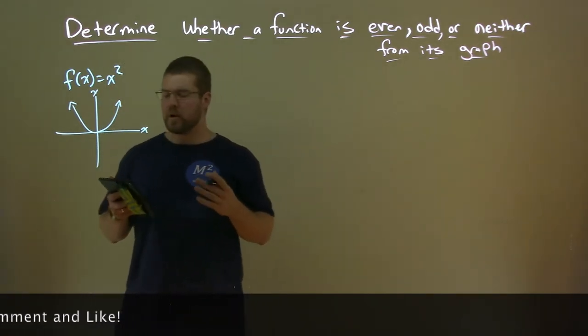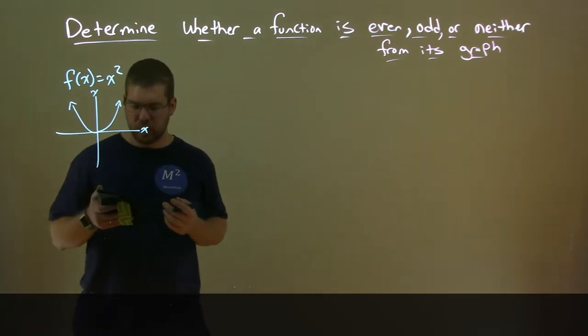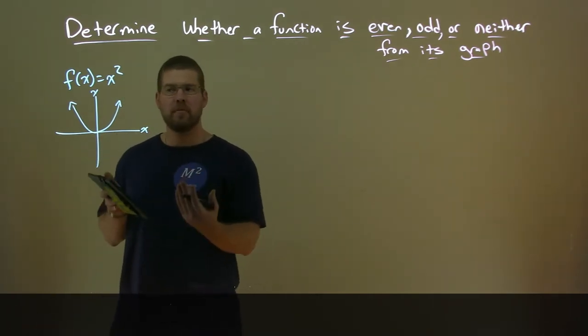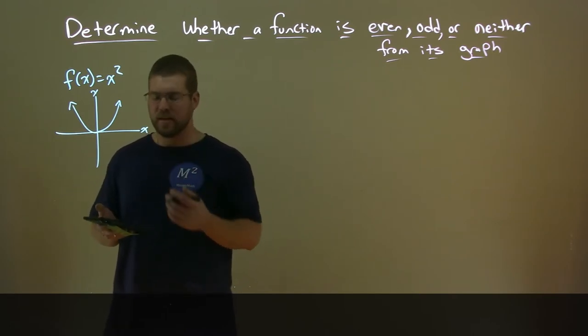When that happens, we call that an even function. When it reflects over the y-axis and has the same function, it's an even function.